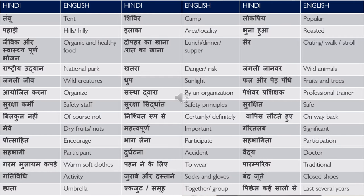भुना हुआ — roasted. It can come in the context that during camping we will be eating roasted food — भुना हुआ खाना खाएंगे शिविर के दौरान. जैविक और स्वास्थ्यपूर्ण भोजन — organic and healthy food. दोपहर का खाना या रात का खाना — we say lunch or dinner. You can also call रात का खाना as supper. सैर — outing, walk, or a stroll. राष्ट्रीय उद्यान — national park. हम राष्ट्रीय उद्यान में शिविर करने जा रहे हैं.